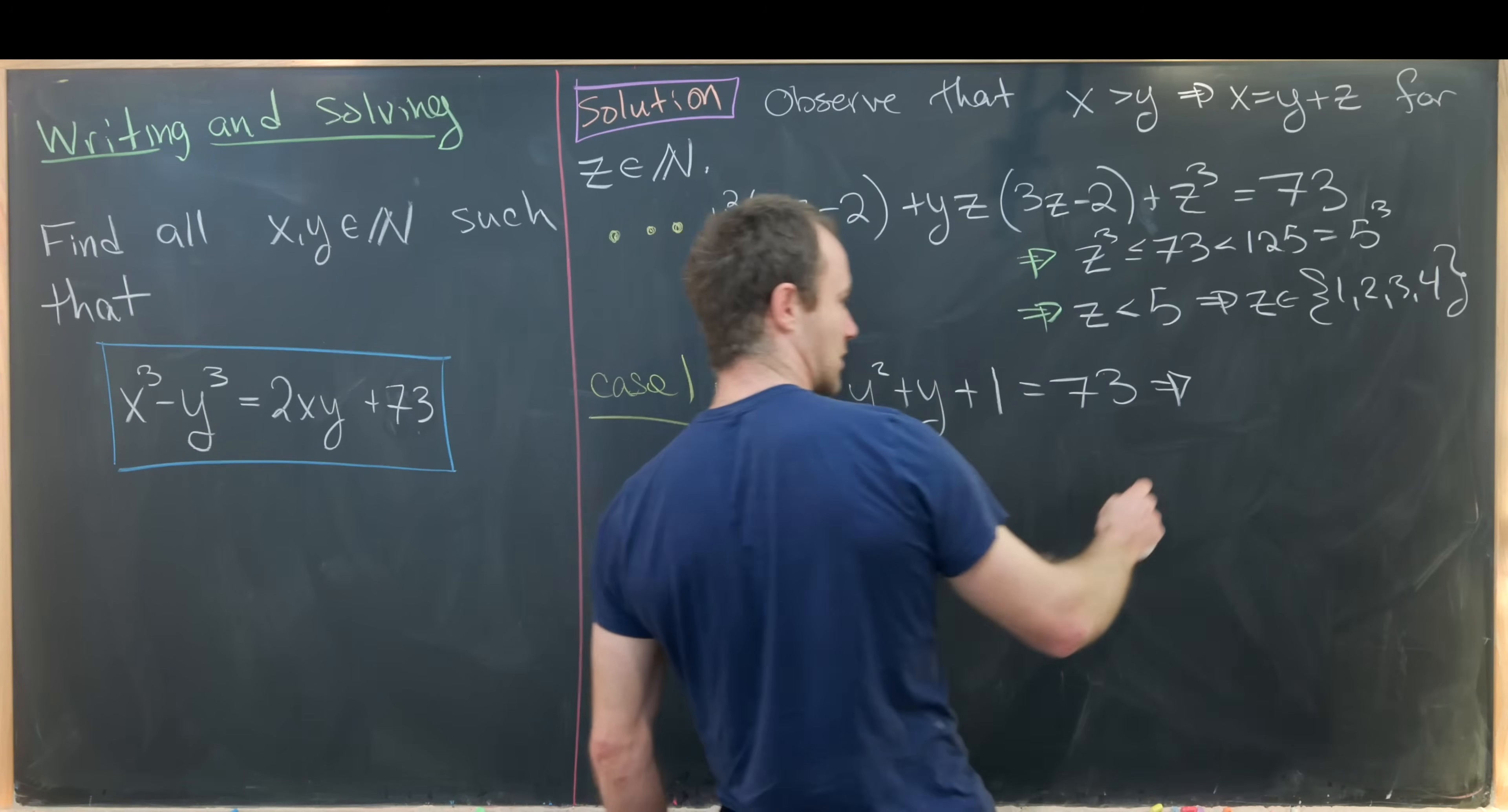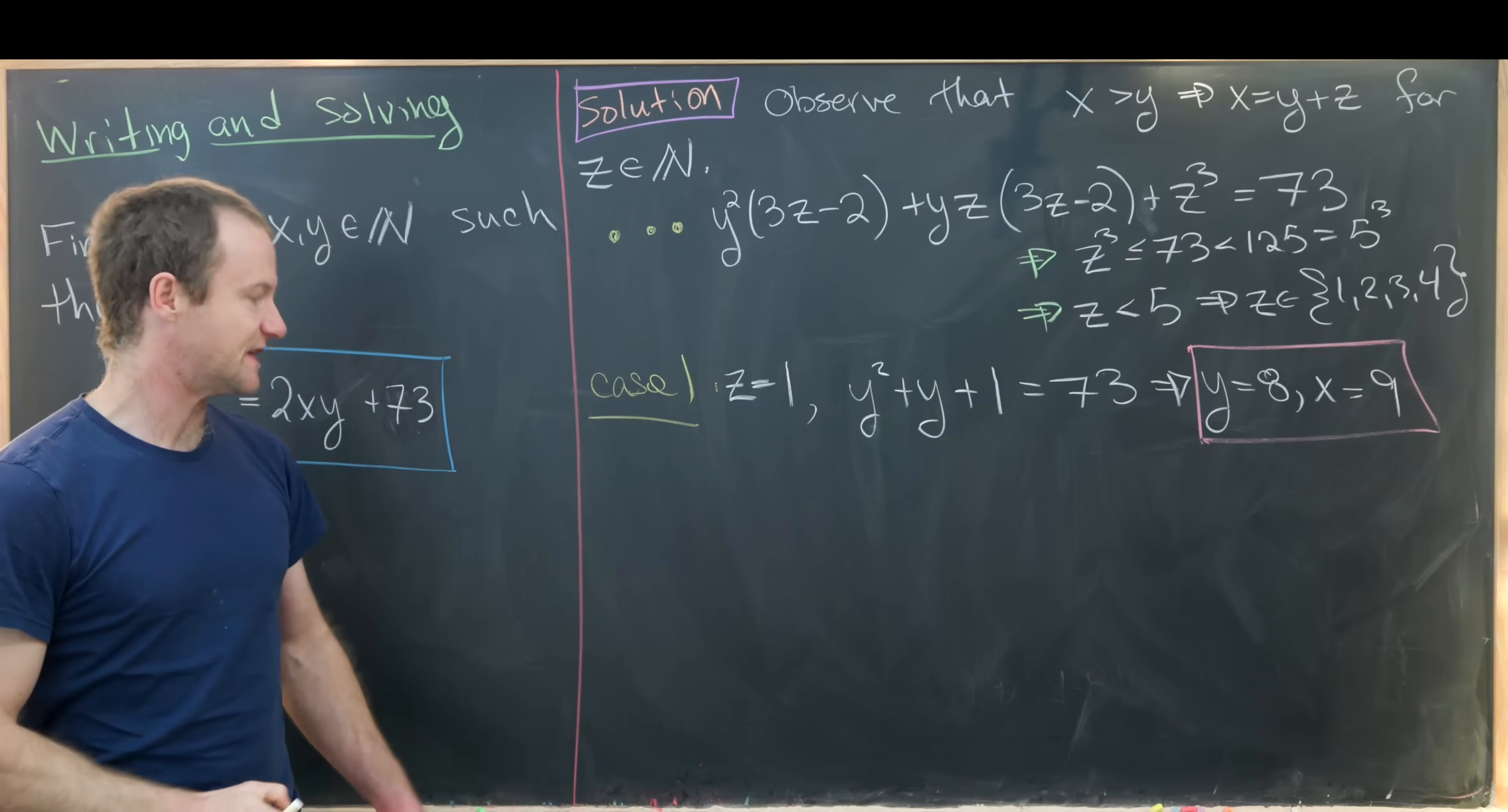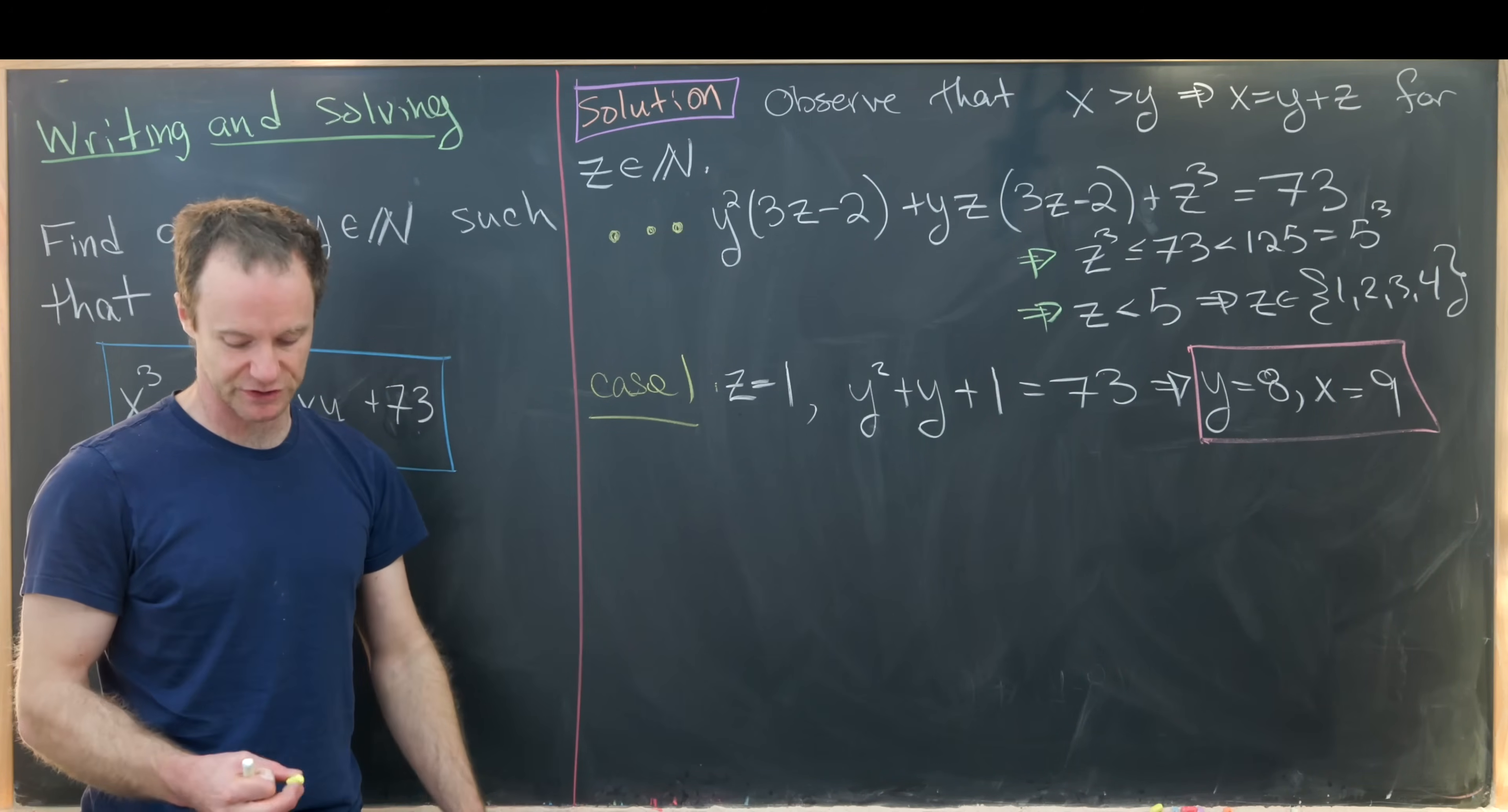And if I recall correctly that gave us y equals 8 and x equals 9 as our solution. But now we have to work through each of these one at a time. Likely this is the only solution because this number 73 was built so that we had a solution when z was equal to 1.